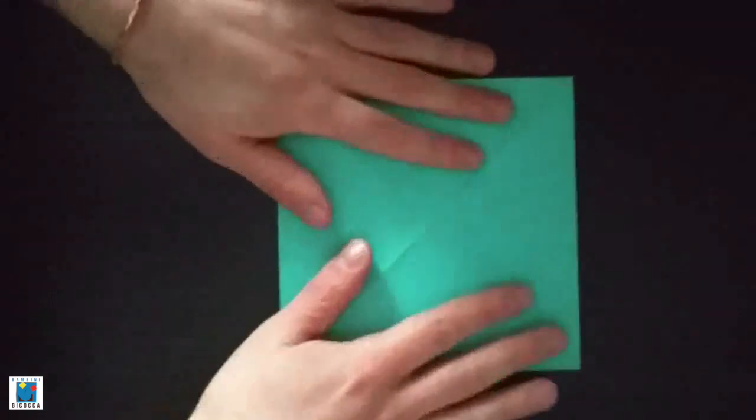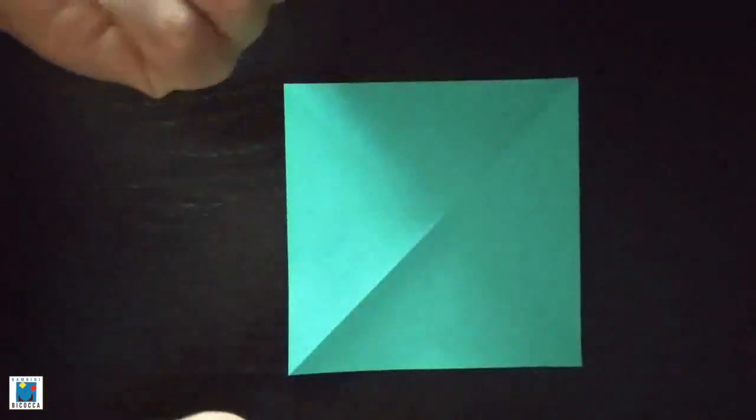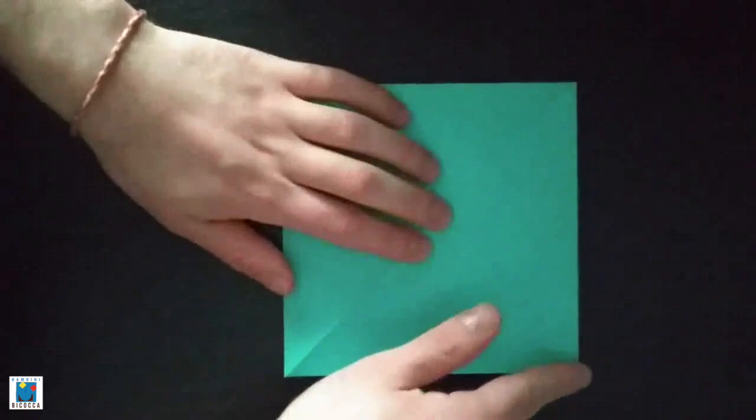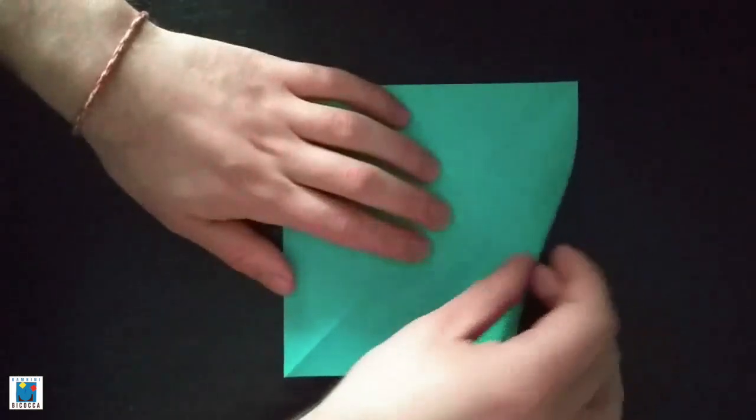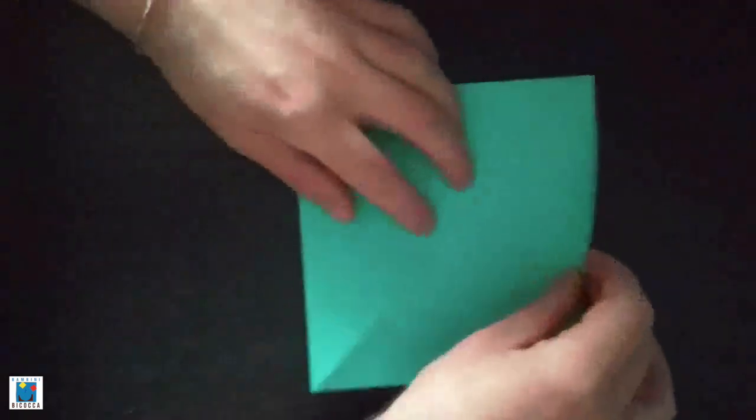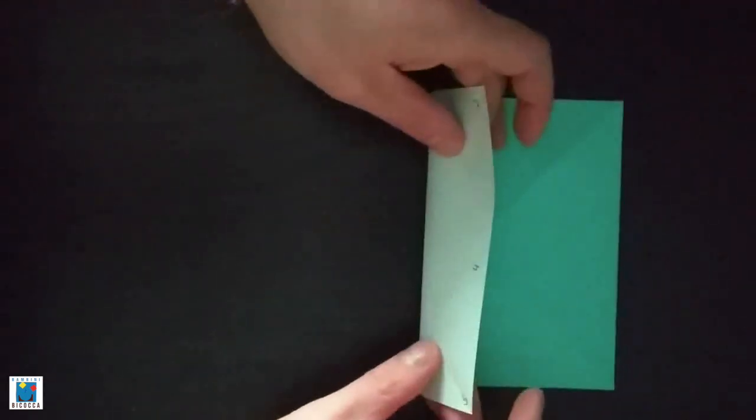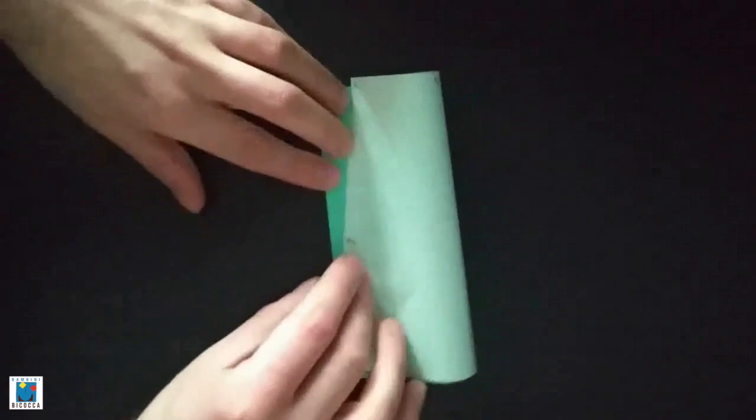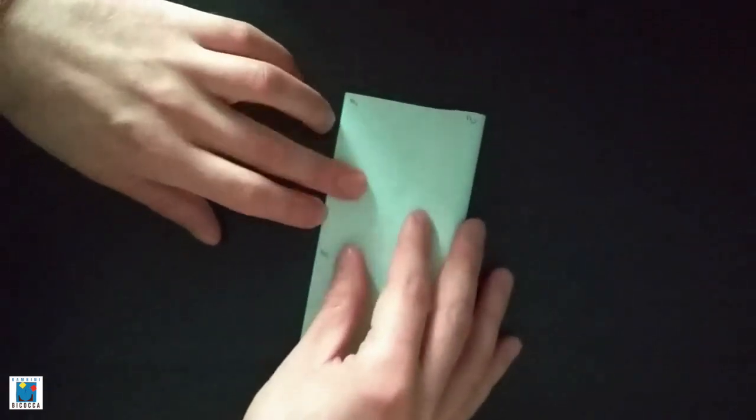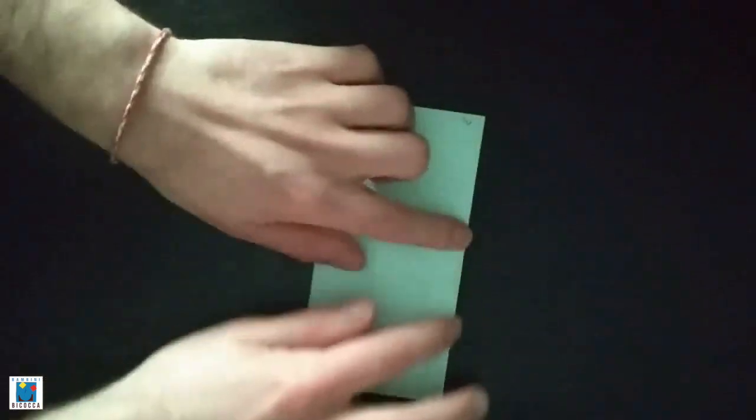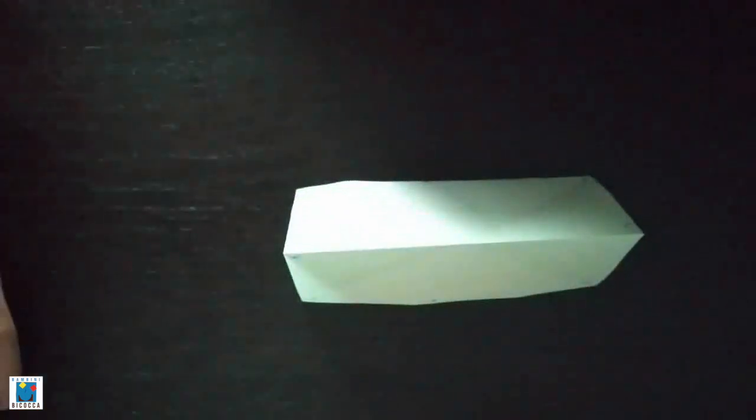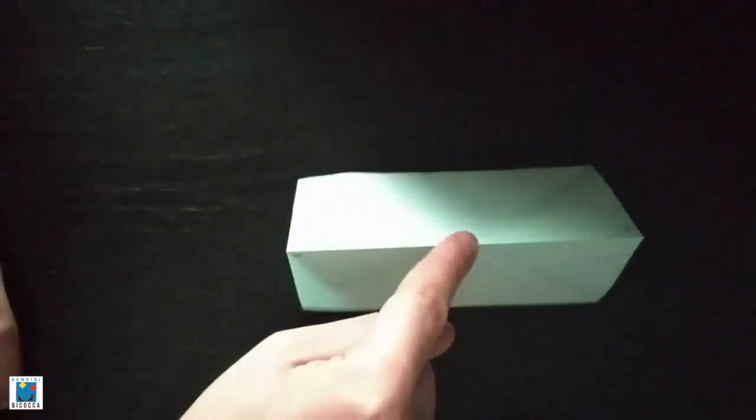We're gonna have the colored side pointing towards us. Now, we're gonna take this side here, which is number 8, and we're gonna put it on number 4. And we're gonna fold it in half. Now, we have this roof top. And we're gonna take our finger and we're gonna push right here in the middle.